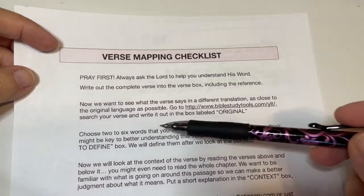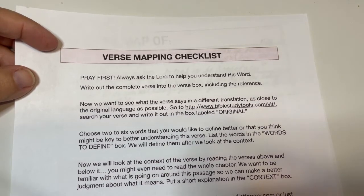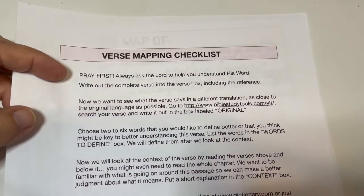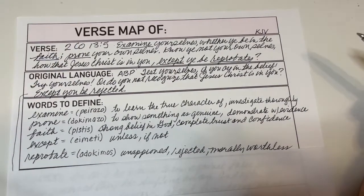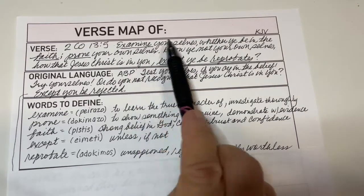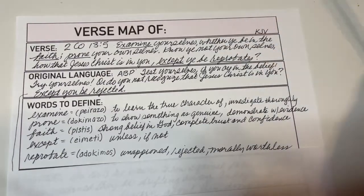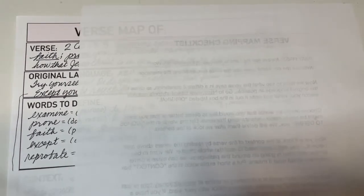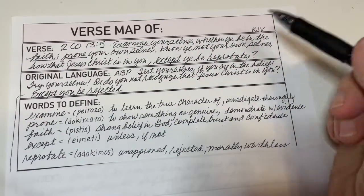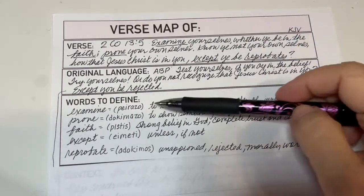The next instruction says to choose two to six words that you would like to define better, or that you think might be key to a better understanding of this verse. List the words in the 'words to define' box. I chose five words — I underlined them in the verse: examine, prove, faith, except, and reprobate. I also wrote down the Greek word for each, since we're in the New Testament, which is in Greek, not Hebrew.